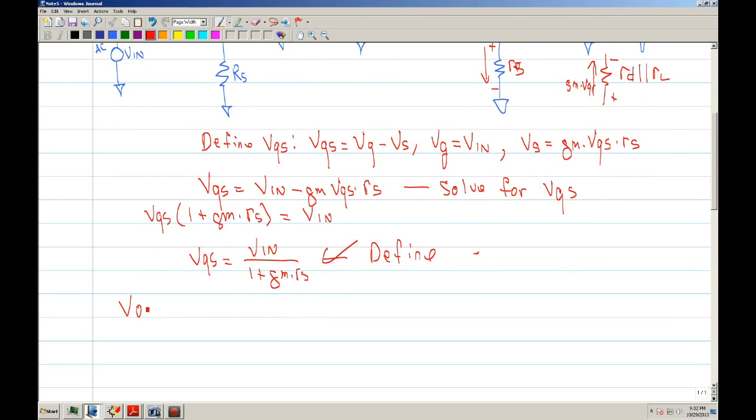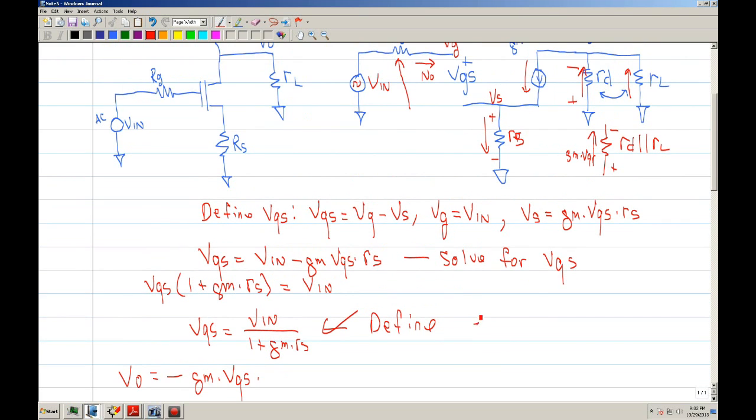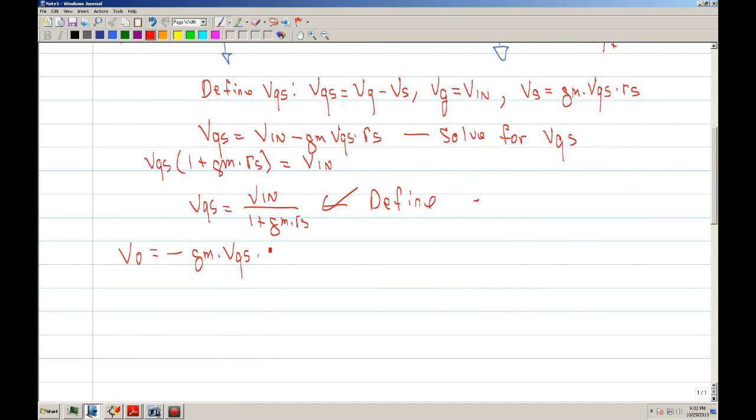So we can write an equation for Vout. We say that it's going to be a negative and it's going to be GM times VGS times the resistance which is RD in parallel with RL.